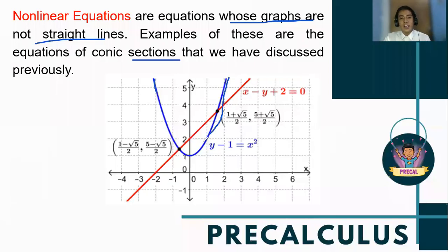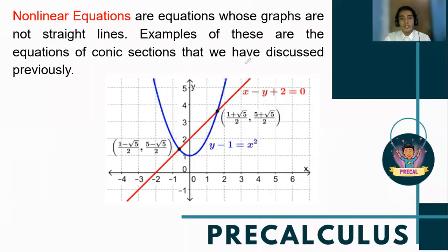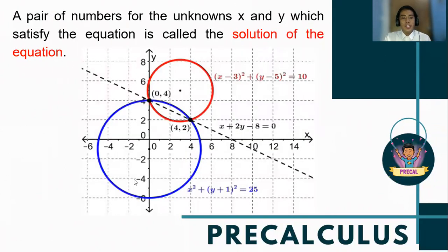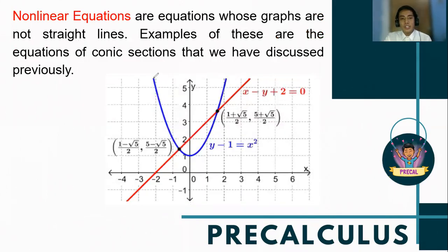Observe this blue curve — this is a non-linear equation represented by y minus 1 is equal to x squared. And this one is a linear equation because it is represented by a line: x minus y plus 2 is equal to 0. Non-linear systems should be composed of at least one non-linear equation. So even if there is a linear equation present, as long as there is one curve, it is considered a non-linear system. It doesn't need to be two non-linear equations — only one is applicable.